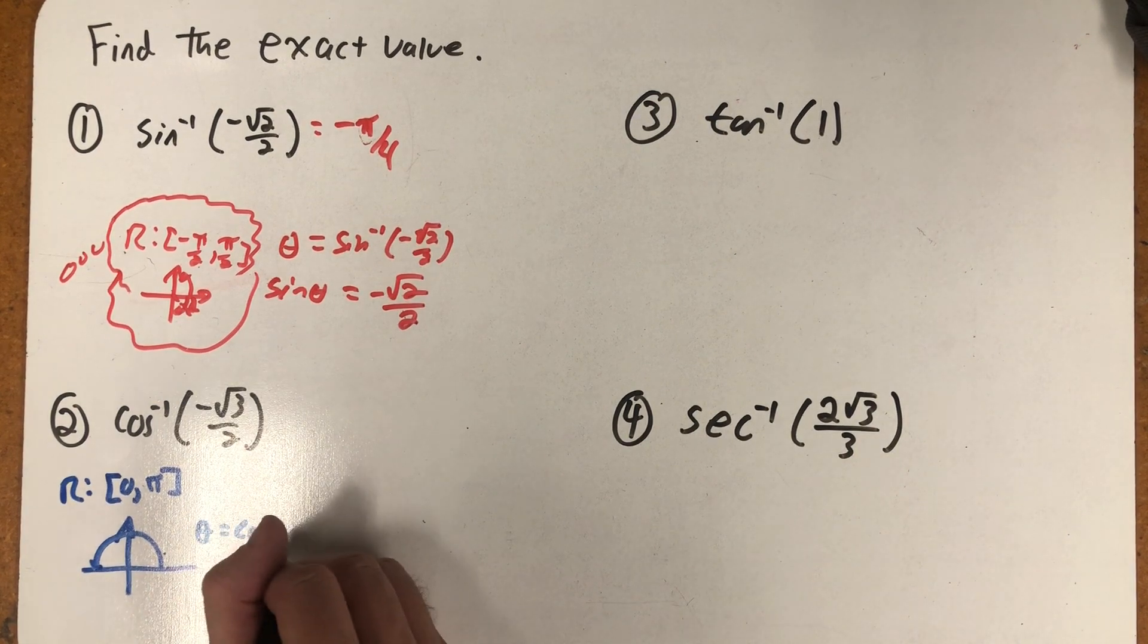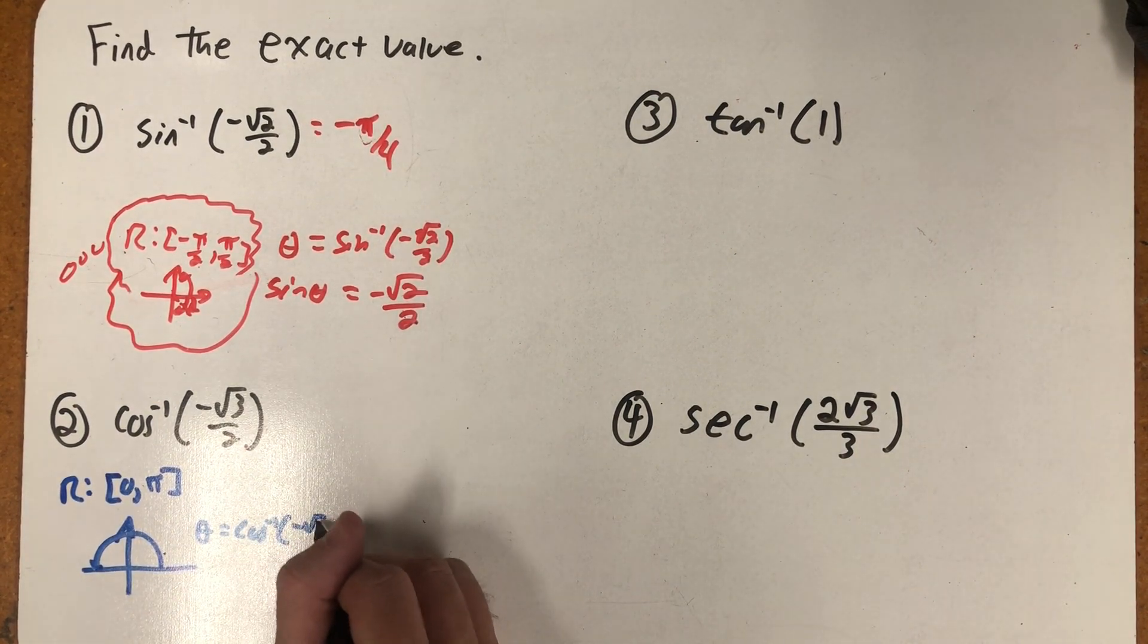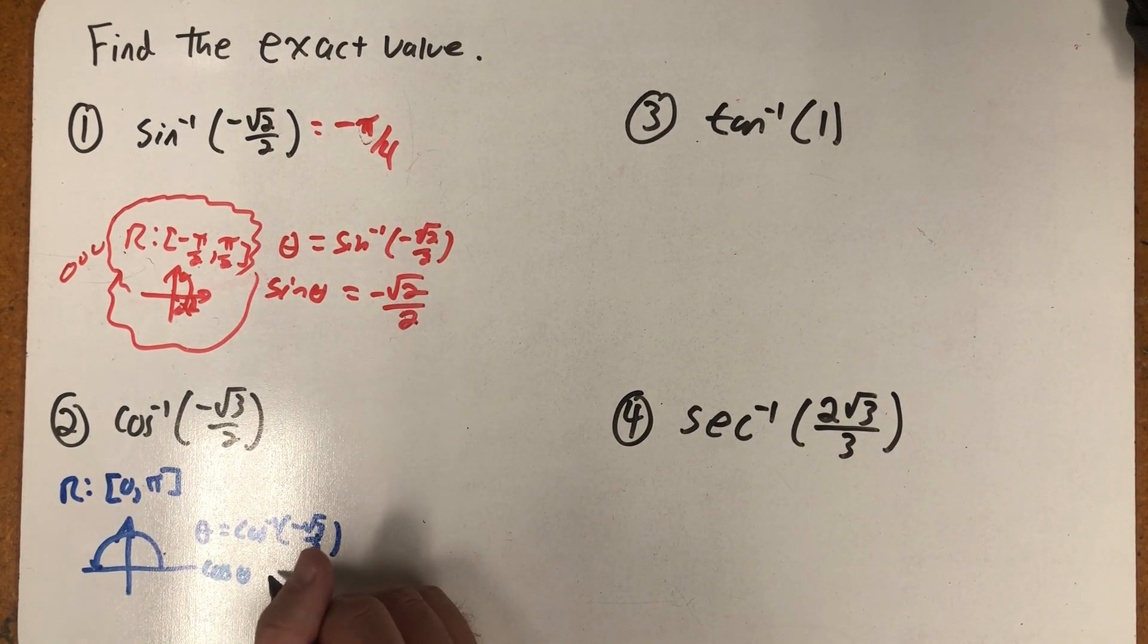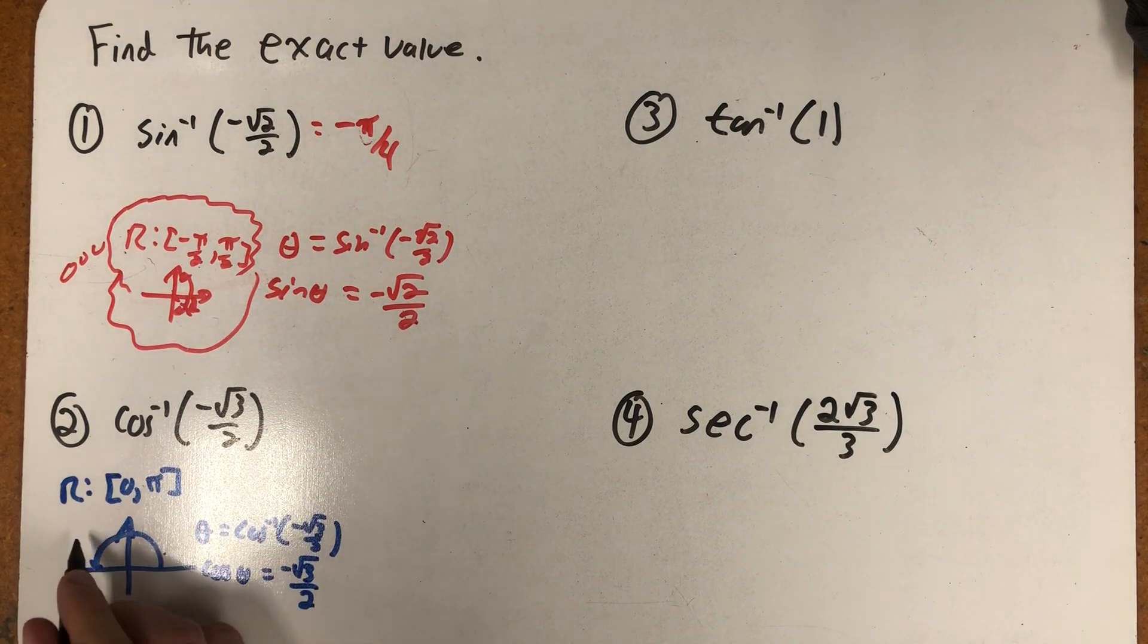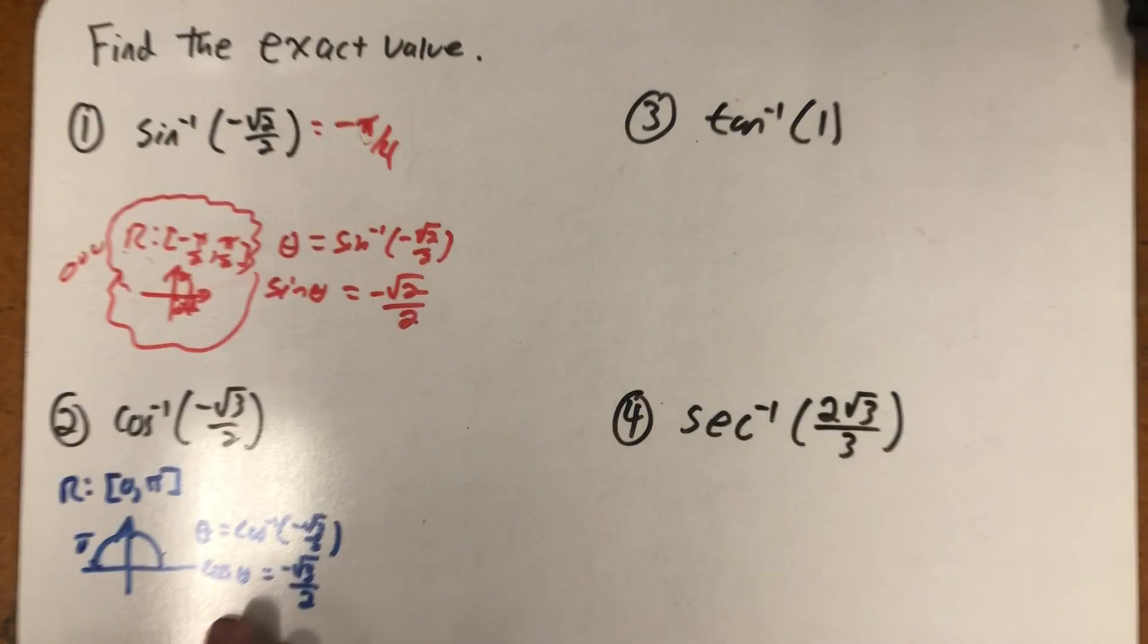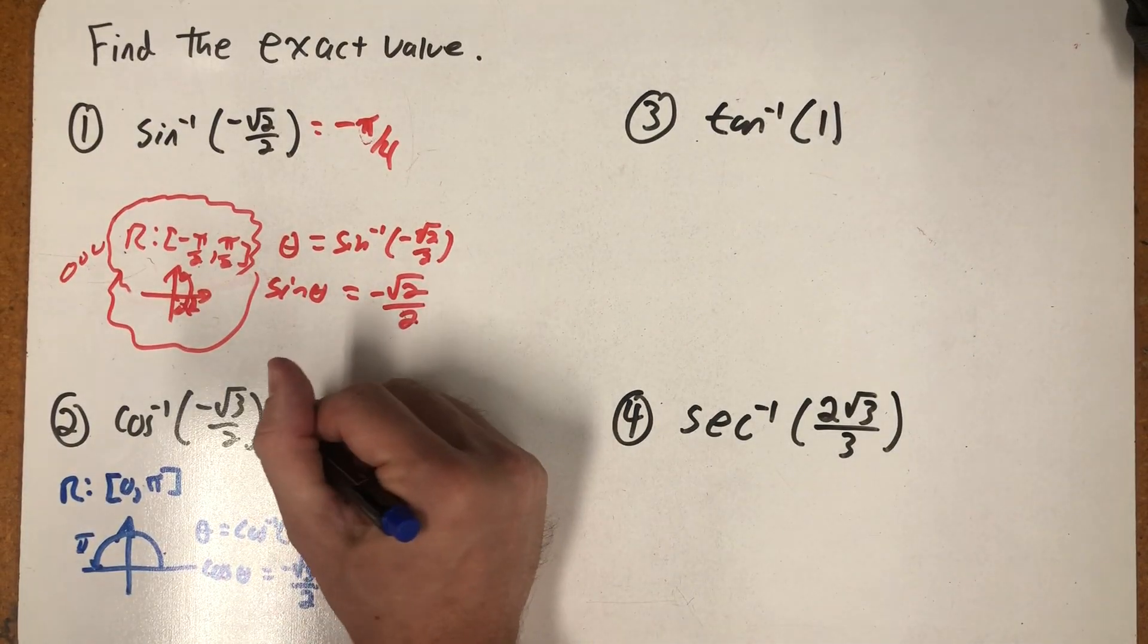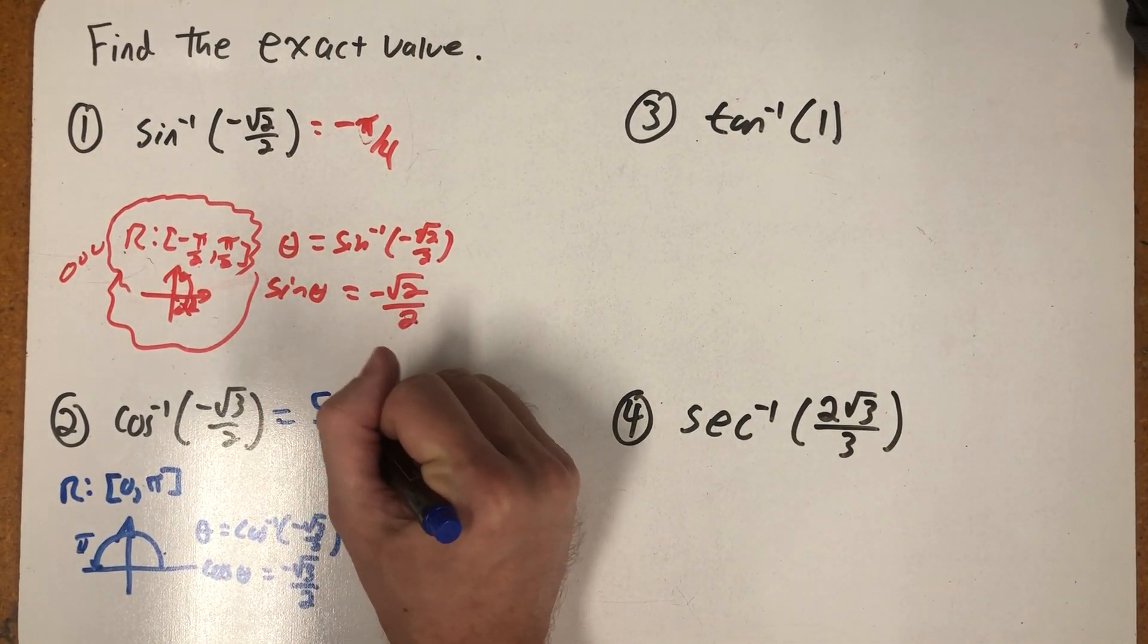So if I'm thinking about this as an angle, I'm really looking for the angle in quadrant two where cosine is equal to minus root three over two. So I'm looking for a second quadrant angle where cosine is equal to minus root three over two, and that has to be five pi over six.